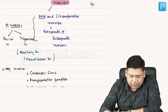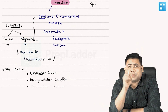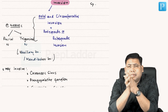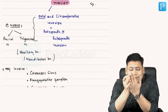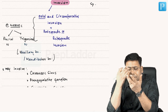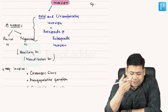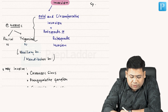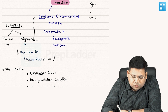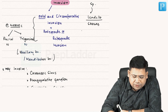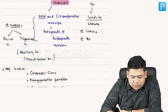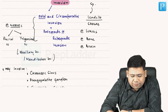The hematogenous spread is the reason behind late recurrence and distant metastasis. The sites of spread involve the lungs, the bone, and the brain — so lungs, bone, and brain are all involved.